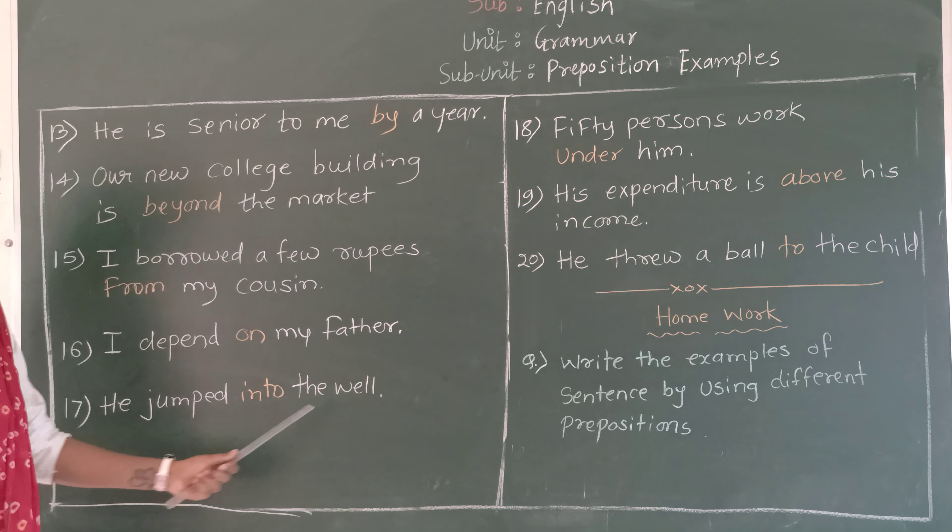Next: His expenditure is above his income. Here we have used the preposition 'above'. Expenditure means taacha zo kahi kharcha hai to. His expenditure is above his income — meaning taacha income peksha taacha kharcha nara paise haa chastha hai.